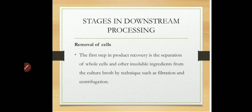In the first stream of downstream processing, the product is removed or separated from the fermenter, and the whole cells or mycelium are separated with the help of filtration technique. The first step — product recovery — is the separation of whole cells and other insoluble ingredients from the culture broth by techniques such as filtration and centrifugation, which separate the mycelium of Penicillium chrysogenum and all insoluble contents from the medium.